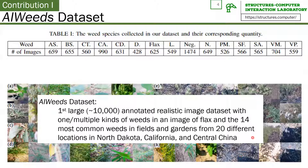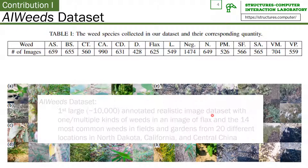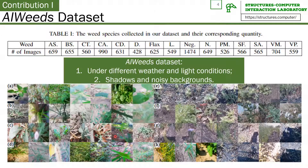Our AI-Weed is the first large annotated realistic image dataset with 14 of the most common weeds from 20 different locations. As you can see, images are taken under different weather and light conditions with noisy backgrounds. Within AI-Weed, each weed has roughly 600 photos.